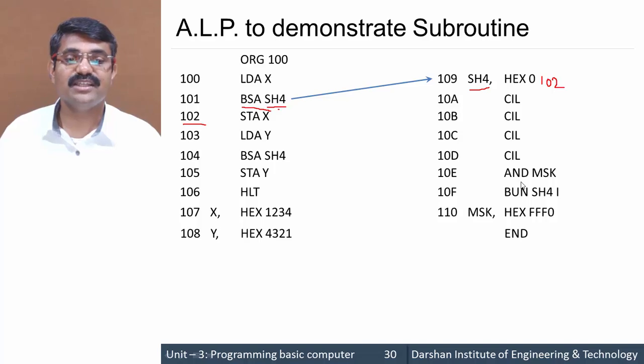BUN, Branch Unconditionally, is written at the end of the subroutine. We need to jump to the address SH4, but the instruction is indirect. Indirect means we don't jump to SH4 itself, but to the address stored in SH4.